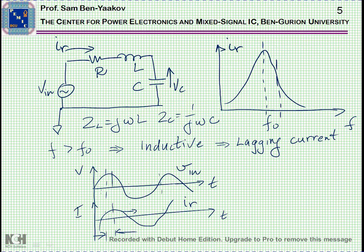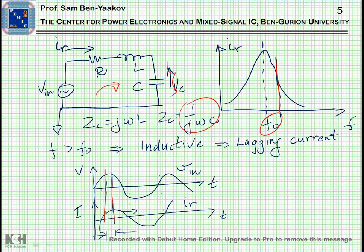On the other hand, if we operate at a frequency above the resonant frequency, the capacitor impedance becomes smaller and smaller, so we see an inductive equivalent and therefore the current will be lagging. That is, there is a phase shift and the current lags after the voltage. This is important because we'll have to take these considerations into account when we decide at which frequency to operate.